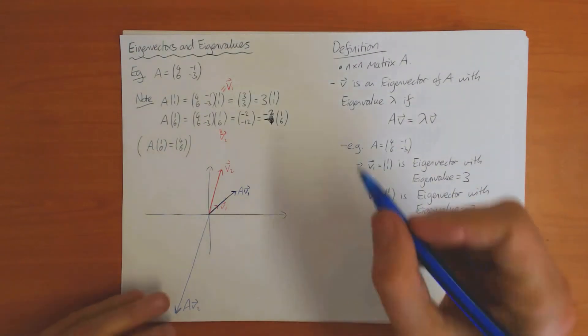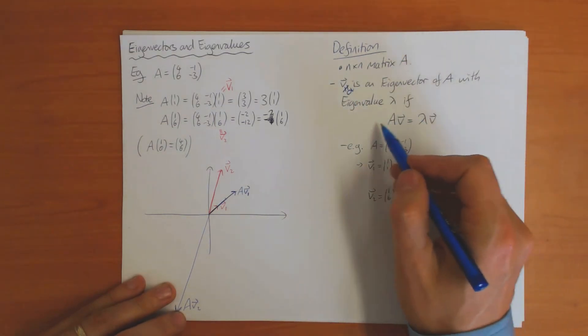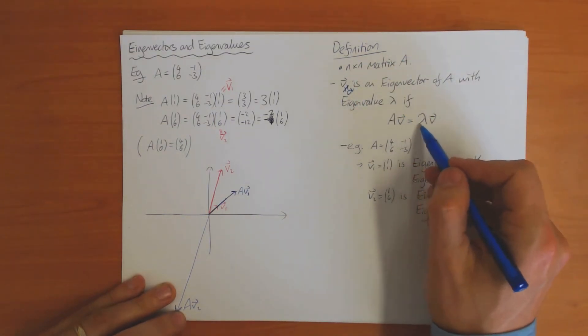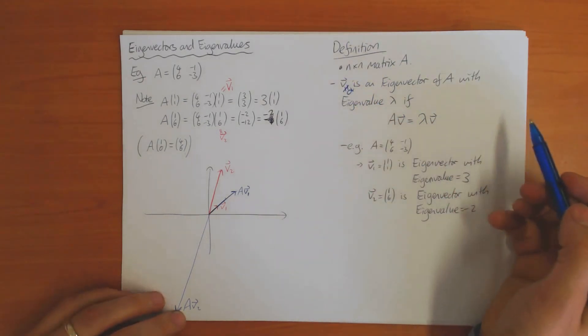An important point to note is that this vector v must not be equal to 0, because if v is equal to 0 then this equation is trivially true—you get 0 equals 0. So we're only interested in non-zero solutions to this equation.